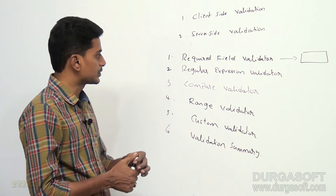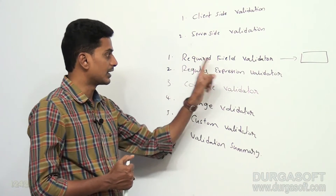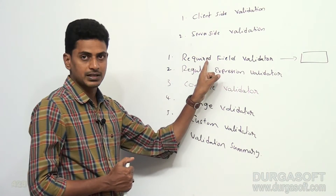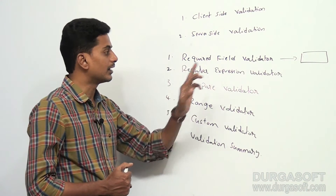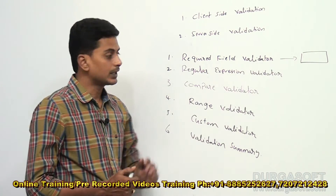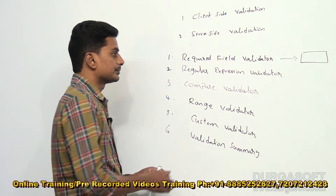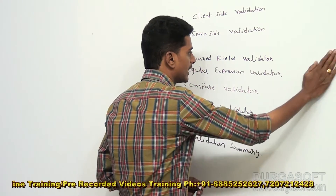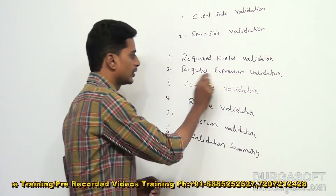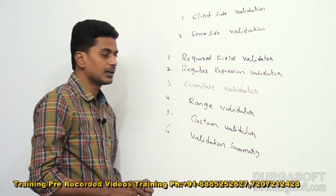Required Field Validator checks whether data is available in the control. If the control is empty, the page is not submitted. If the control has some data, then the Required Field Validator finds that data is available and the request can be sent. Required means compulsory — it is required to enter some data. Next is Regular Expression Validator.